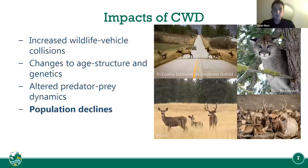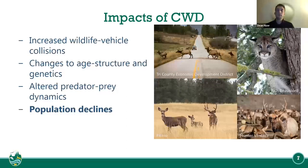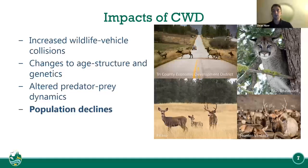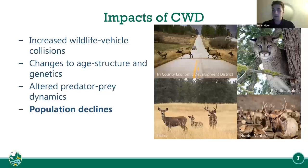For increased wildlife vehicle collisions: cervids that have chronic wasting disease are less scared of human presence. When they're in the final stages, they see humans and cars but their natural instinct to run away is taken away. So you'll see more wildlife vehicle collisions, and more predator-prey interactions because they're less scared of predators and will get preyed on more easily.